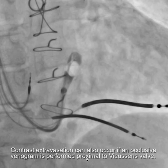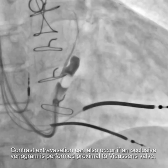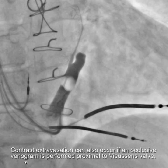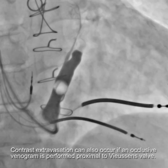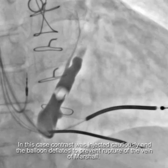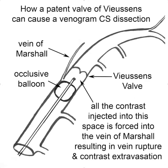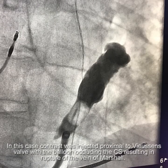Contrast extravasation can also occur if an occlusive venogram is performed proximal to Vusensian's valve. In this case, it was recognized that we were below Vusensian's valve, so the balloon wasn't fully inflated, and contrast injection was done very carefully. If you inflate the balloon below Vusensian's valve and Vusensian's valve is patent, all the contrast that is injected has really only one place to go — into the vein of Marshall — which can result in rupture and contrast extravasation. It turns out to not be too dangerous, though not as bad as if you put the balloon into the vein of Marshall itself.